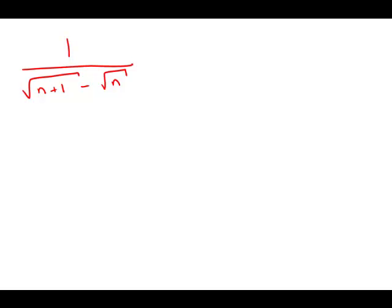So in order to simplify this, we're going to use a move — kind of an obscure algebra move. This is a move that is used a lot in evaluating limits in calculus. And this move is to take advantage of the difference of two squares formula.